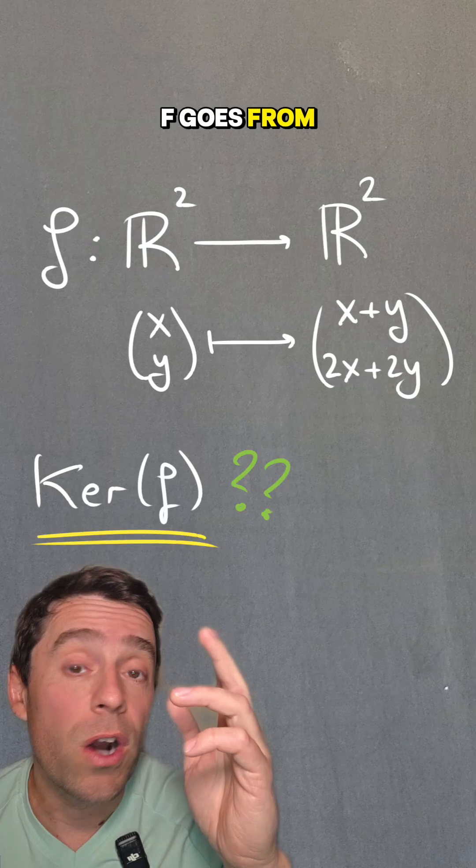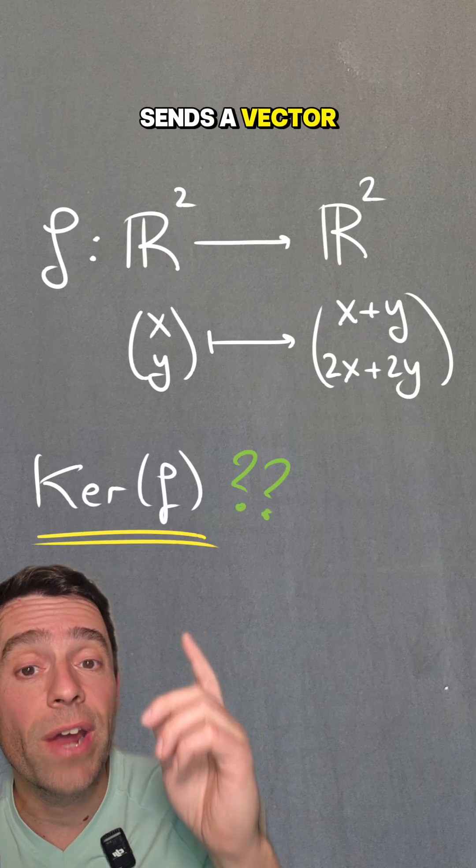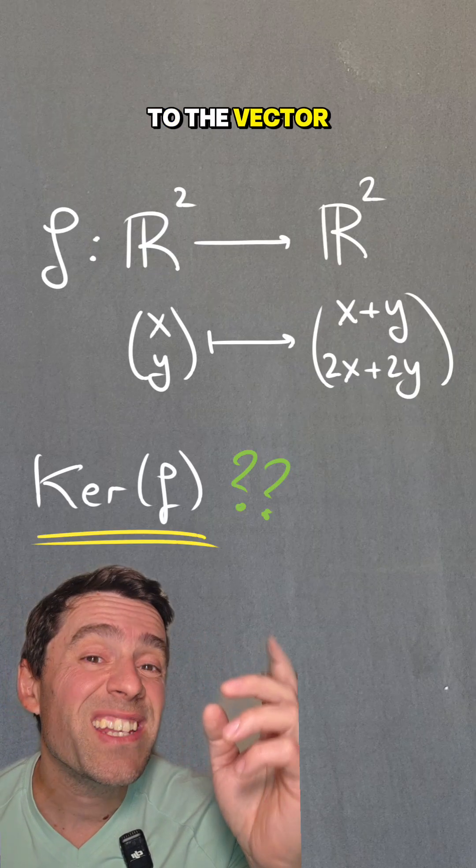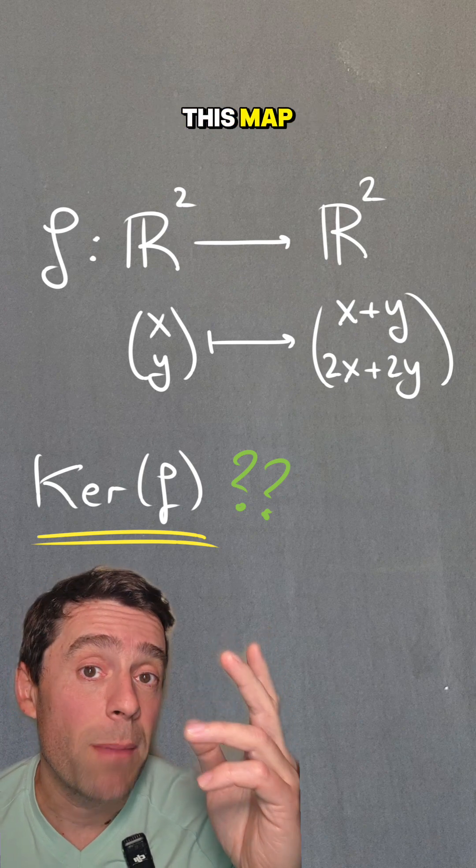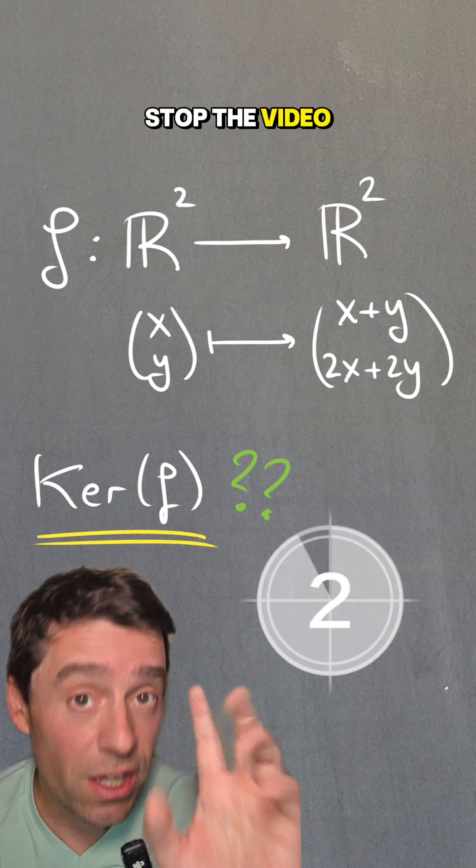For example, here f goes from R² to R² and sends a vector (x,y) to the vector (x+y, 2x+2y). So what is the kernel of this map? If you want to try it out before I do, I'd stop the video here.